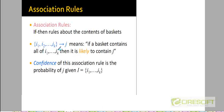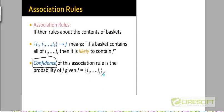The strength of an association rule can be measured by something called confidence. It's not necessary that all customers who purchase items i1 to ik will be purchasing item j, but there has to be a strong enough correlation that we can consider this association rule to be useful. So we are going to measure that by a metric called confidence, which measures the probability of purchasing j given that all k of these items are being purchased.